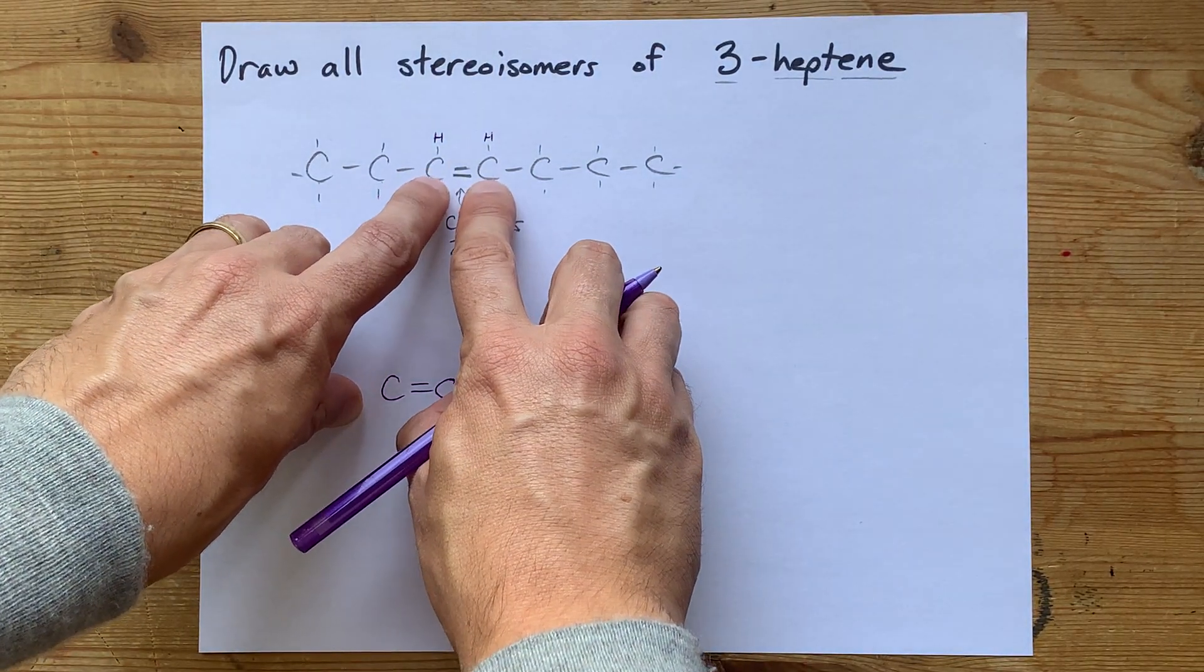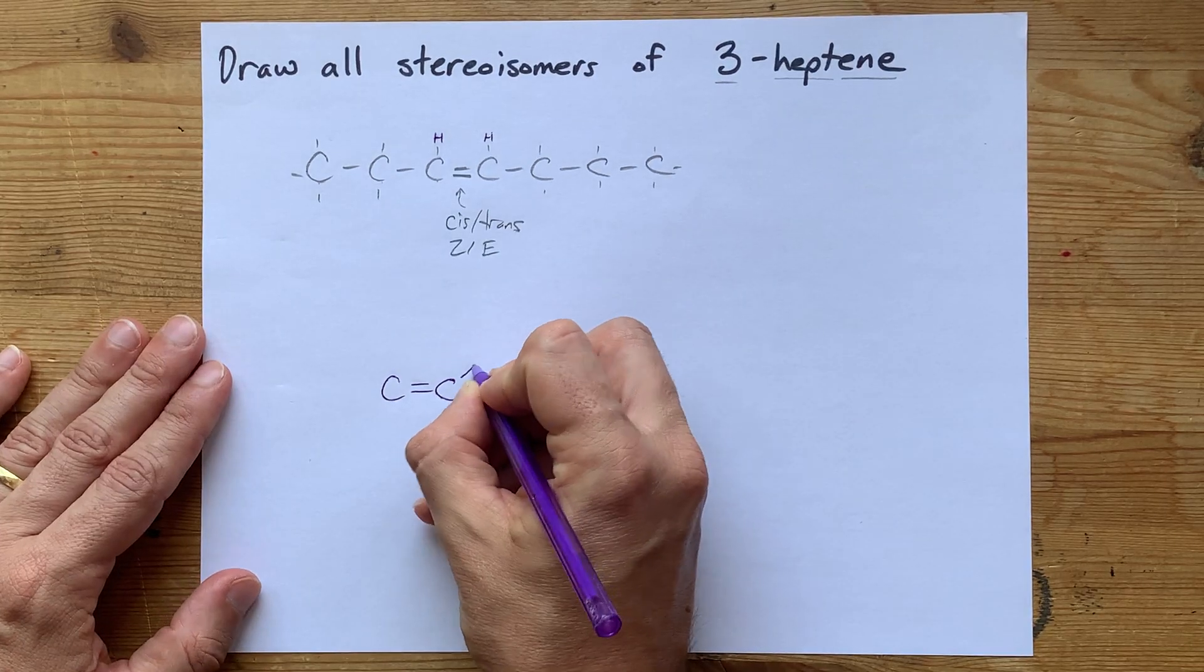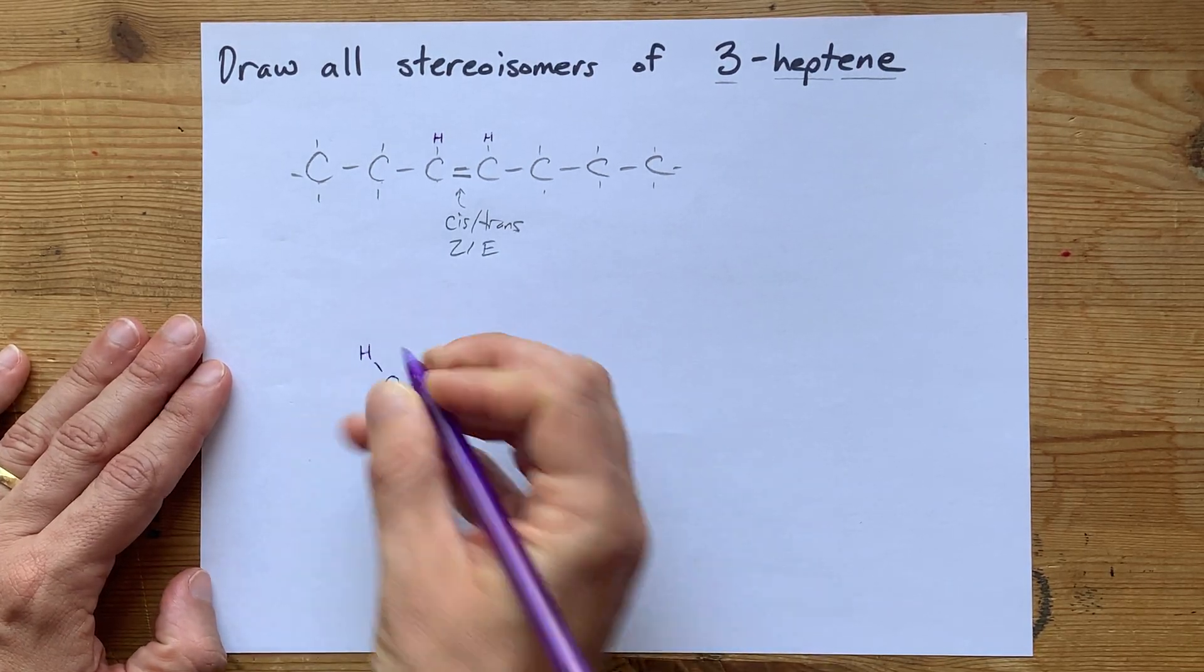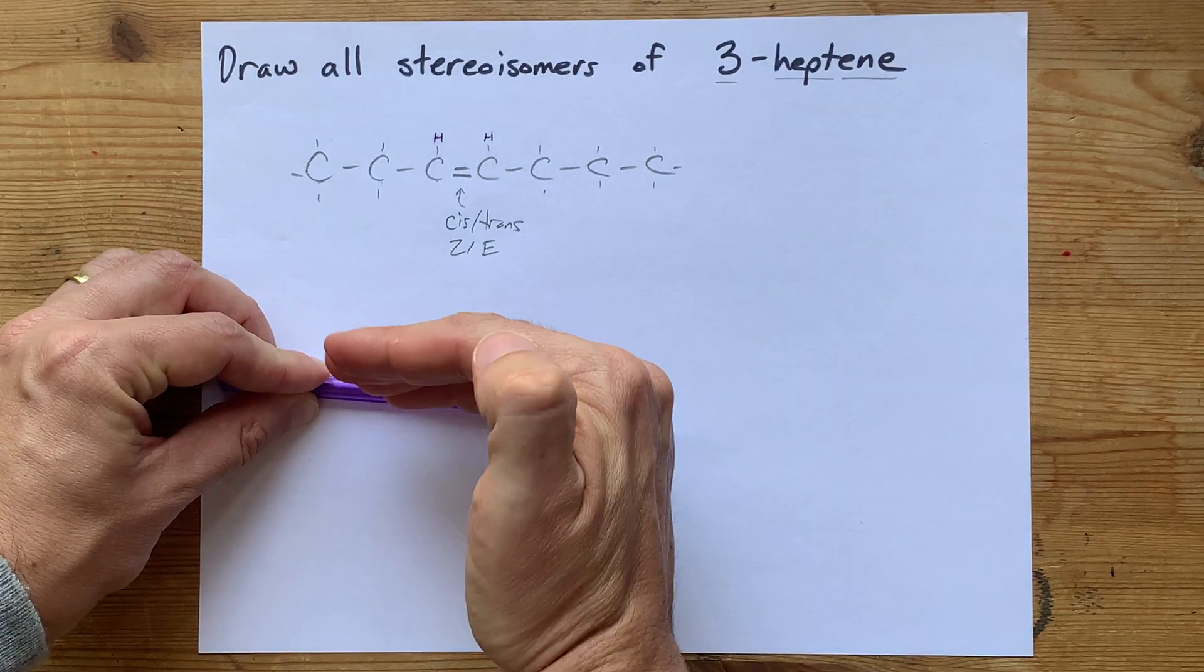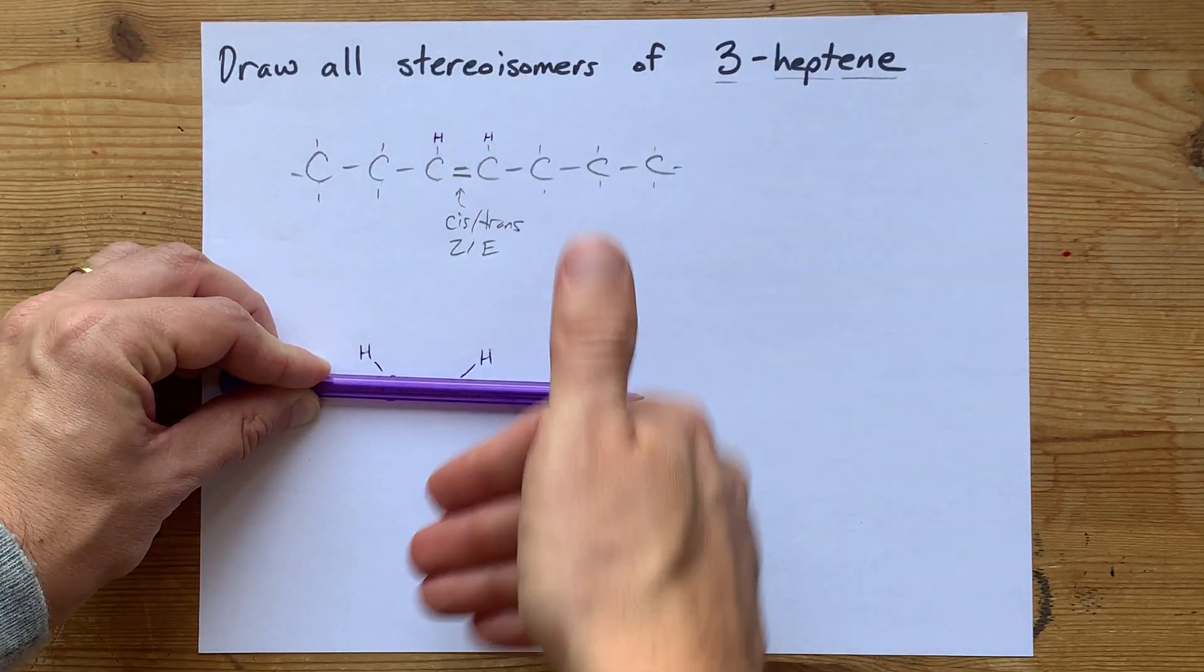What I mean is that both of these carbons have hydrogens on them. So, I'm going to put the hydrogens on both sides of the double bond, and what I mean by that is one hydrogen per carbon, but they're both either on the top or bottom.